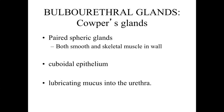The bulbourethral glands are also referred to as Cowper's glands. These are paired spherical glands that have both smooth and skeletal muscle within the wall. They are involved with secreting lubricating mucus into the urethra, essentially priming the urethra for the delivery of spermatozoa.